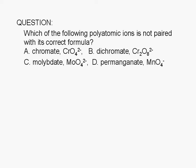Which of the following polyatomic ions is not paired with its correct formula? A. Chromate, B. Dichromate, C. Molybdate, or D. Permanganate.